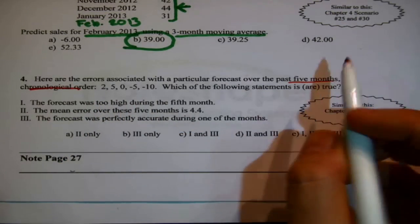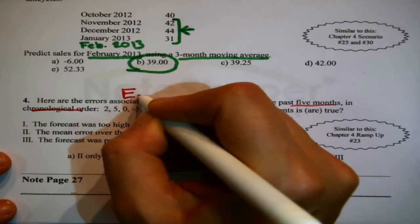Let's look at this one. This one's kind of in the style of triple true false. It's about interpreting errors. Here are the errors associated with a particular forecast over the past five months in chronological order. So somebody forecast and then we found out what happened and this is the error: 2, 5, 0, negative 5, negative 10. Which of the following statements are true? So we want to test them one at a time. Speaking of staying organized, what we might want to jot is a little reminder to ourselves, capital E for error. Error is always actual minus forecast.